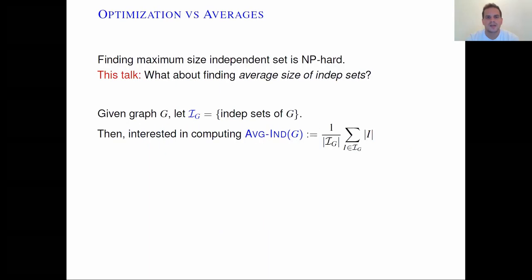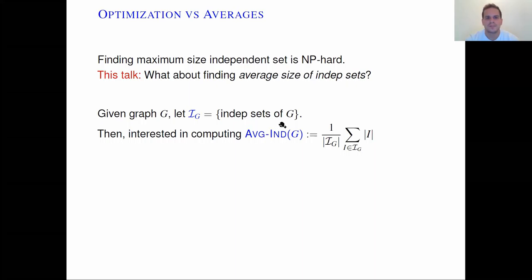It is a classical result that finding maximum size independent sets is an NP-hard problem, and it remains NP-hard even for approximation algorithms. So in this talk, we'll focus instead on the average size of independent sets. Given a graph G, we'll look at the set of all independent sets of the graph G, and we'll be interested in computing their average, that is the aggregate of their sizes normalized by their number.